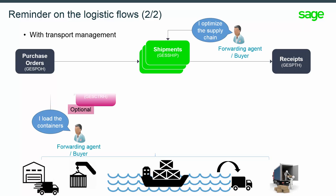For the containers function, it allows you to track the container ID and identify the contents. When using containers, the shipment and receipt are created by picking containers. A container groups multiple PO lines, and the freight and volume of the purchase quantities defined on those PO lines will be compared to the capacity defined for the container.